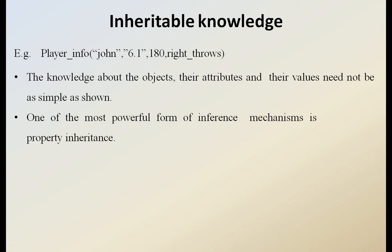The most powerful mechanism to represent such a kind of knowledge by using the objects, their attributes, and the values, and how they are represented, is also called property inheritance. Property inheritance is one of the important mechanisms to represent such a kind of knowledge in the form of objects, attributes, and their values.